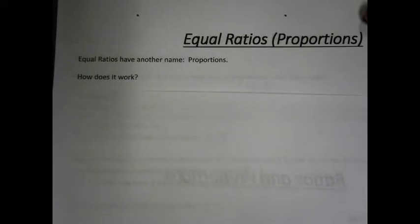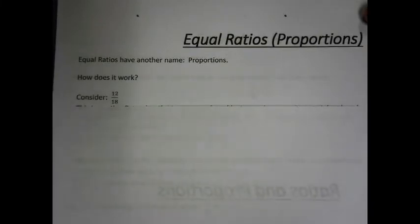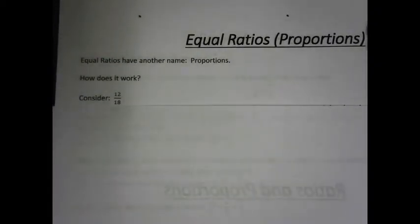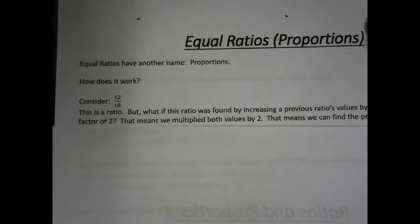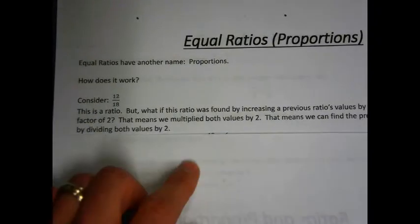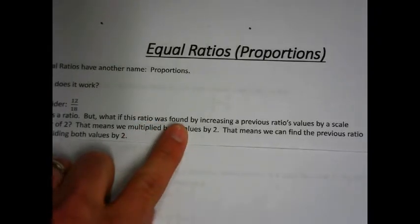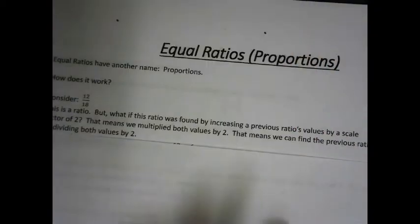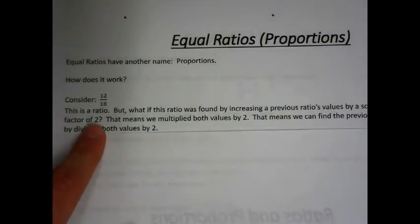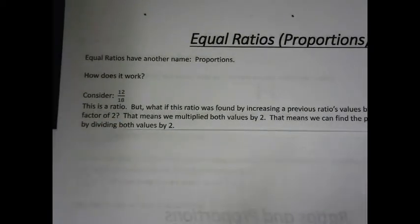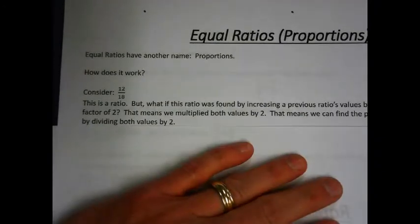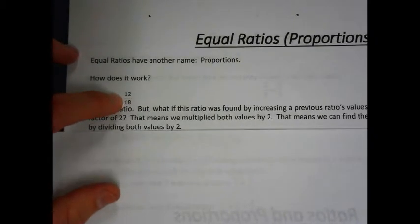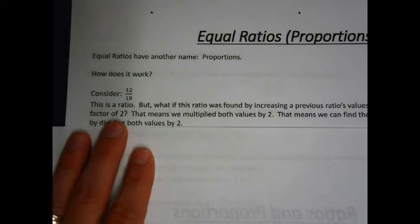Now how does it work? We're going to consider the ratio of 12 to 18. What if this ratio was found by increasing a previous ratio's values by a scale factor of 2? If you remember, a scale factor is the number that we multiply to increase a thing or divide to decrease a thing. What if we found 12 to 18 by increasing a previous ratio by a scale factor of 2?